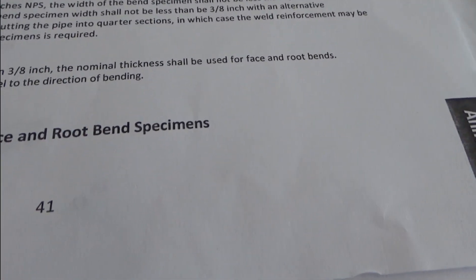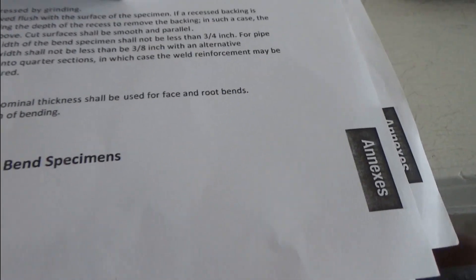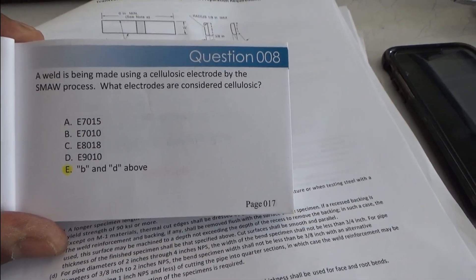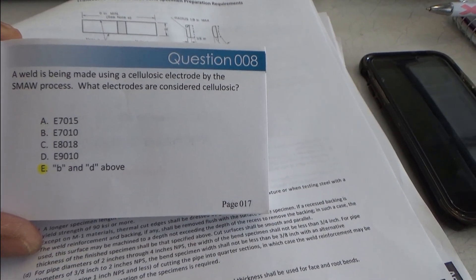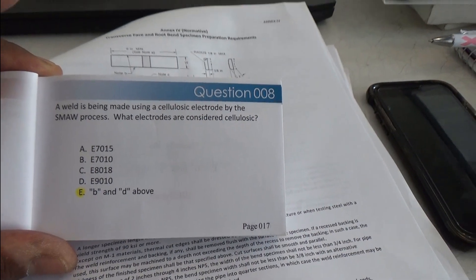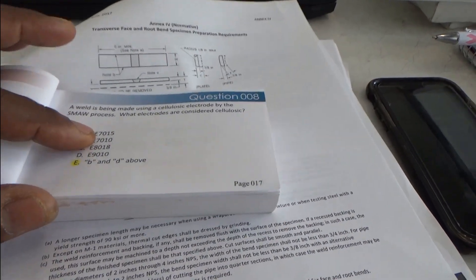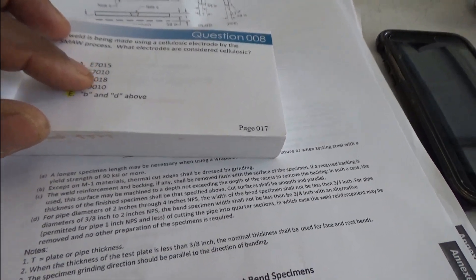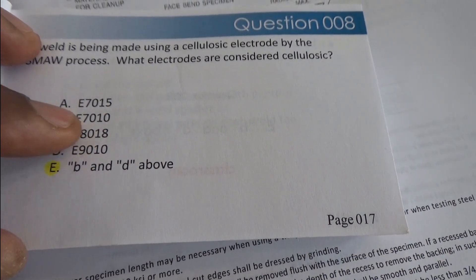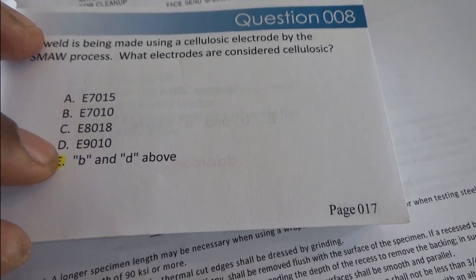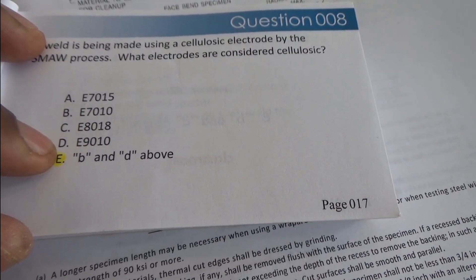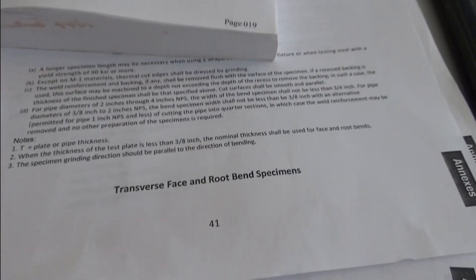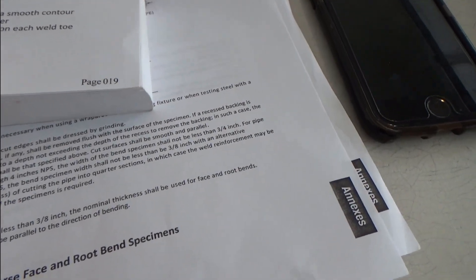A weld is being made using a cellulose rod by the shielded metal arc welding process — what electrodes are considered cellulose? Low hydrogen electrodes end in 5, 6, and 8. So E7015 and E8018 are not the answer. The cellulose electrodes would be the E7010 and E9010. You can verify this in the book of specs.